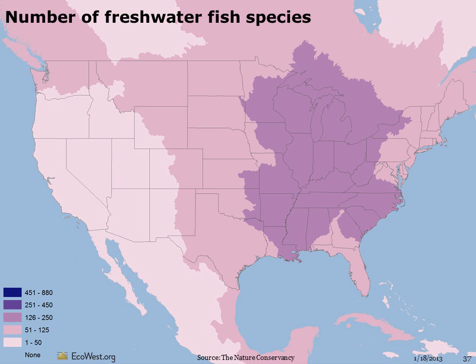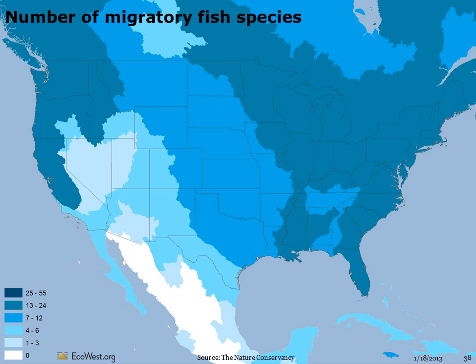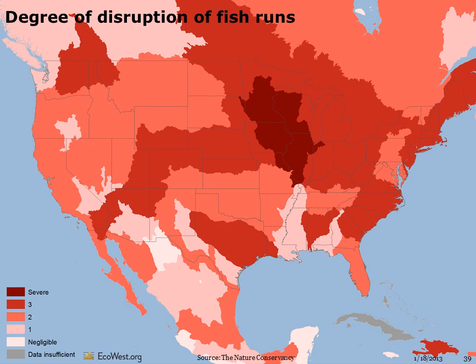In the US, ecoregions around the Mississippi and its tributaries harbor many freshwater fish species — in some cases five times as many as in western ecoregions. There are more than a dozen migratory fish species found in the Pacific Northwest and many parts of the east, but such species are relatively rare in the Great Basin and Arizona. There are nearly 80,000 dams in the US, and virtually all ecoregions have seen their fish runs significantly disrupted. In the west, the problem is especially bad along the Columbia and Colorado rivers, both of which have major hydroelectric dams.